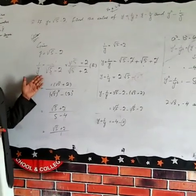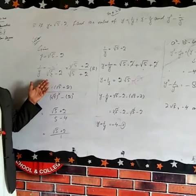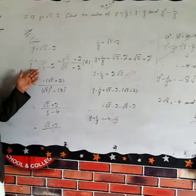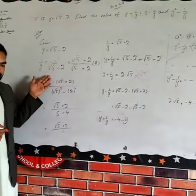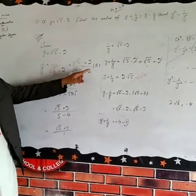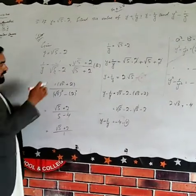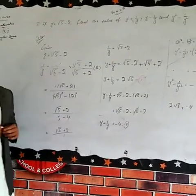This is called a surd and this is called a binomial surd. So you can use a process which is called rationalization. Rationalization uses the conjugate. The conjugate of √5 - 2 is √5 + 2.